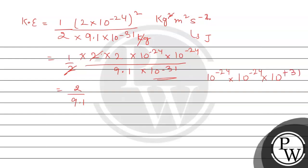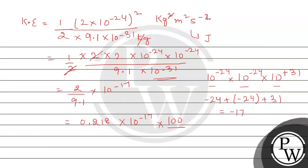The powers give 10⁻¹⁷. Dividing 2 by 9.1 gives approximately 0.218. So kinetic energy = 0.218 × 10⁻¹⁷, which we rearrange to 21.8 × 10⁻¹⁹ joules. This is our kinetic energy.